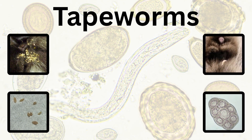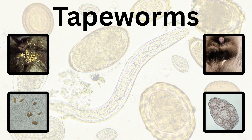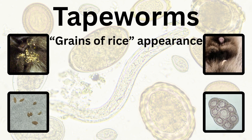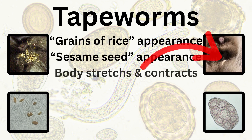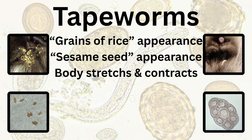Our second most common parasite is the tapeworm. Ever notice rice in the fur around your cat's back end under the tail? If so, you just diagnosed tapeworms. Tapeworm segments, when dry, look like little white grains of rice or sesame seeds. If they are alive, they move as their little bodies stretch and contract, almost like they are waving at you.